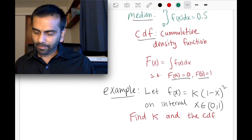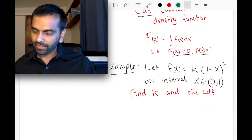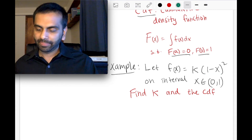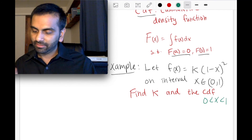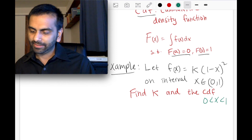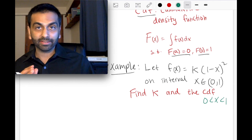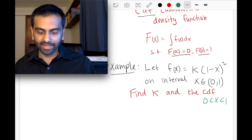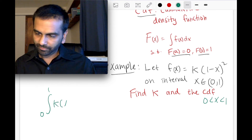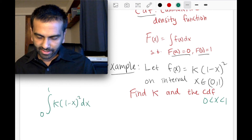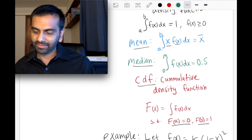Let's do an example. Let the PDF equal k times (1 − x)², where x is between 0 and 1. The question is: find k and then find the CDF. To find k, we use the fact that the total area under any PDF must equal 1. So the integral from 0 to 1 of k(1 − x)² dx must equal 1 — that's the defining property of a PDF.